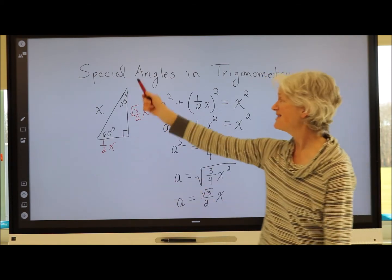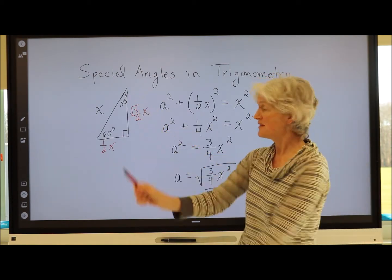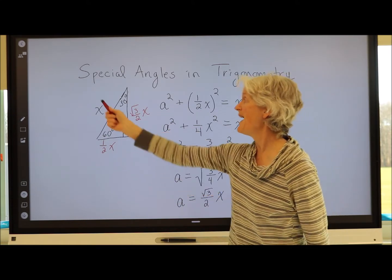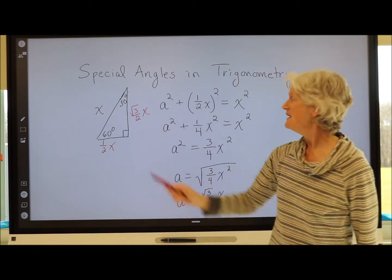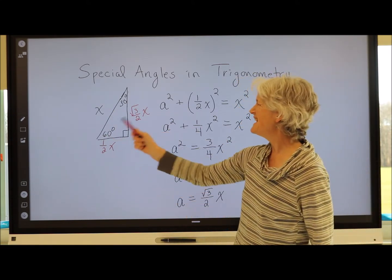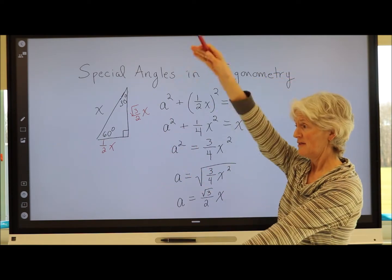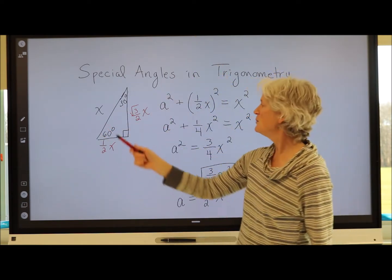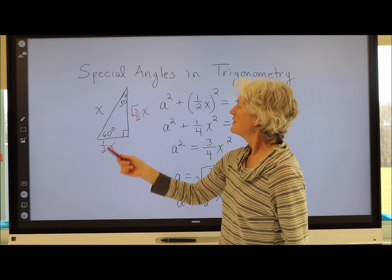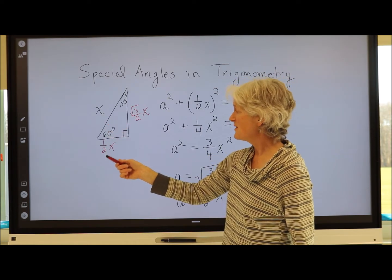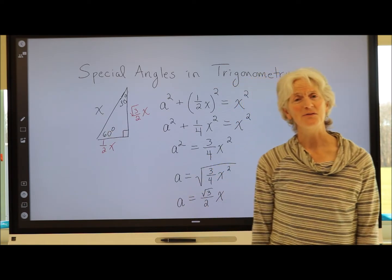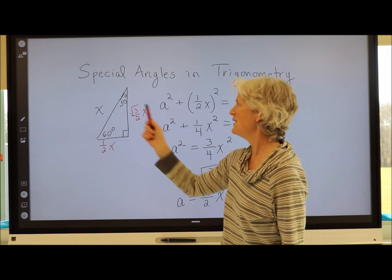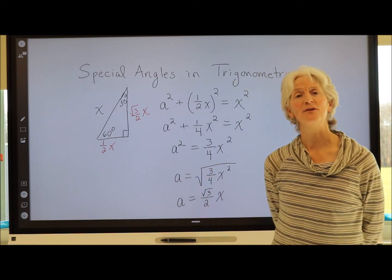The smallest side — opposite the smallest angle — will always be half of the hypotenuse. The next biggest side — opposite the 60° — will be the short side times √3, or equivalently the hypotenuse times √3/2.